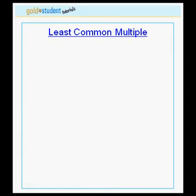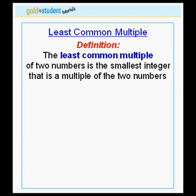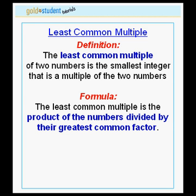This tutorial covers how to calculate the least common multiple of two numbers. First, let's review the definition: the least common multiple of two numbers is the smallest integer that is a multiple of both numbers.